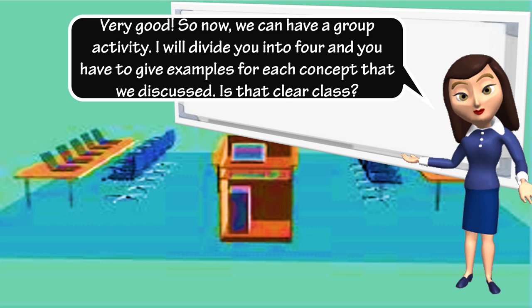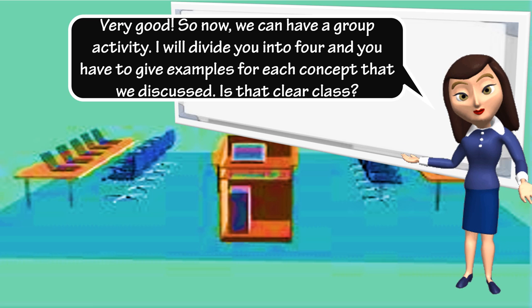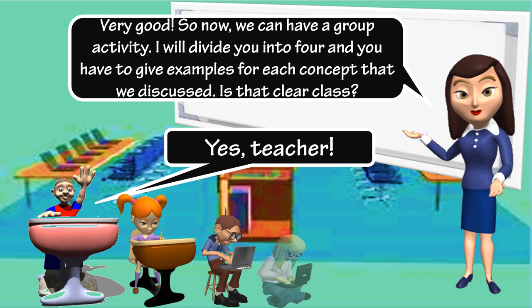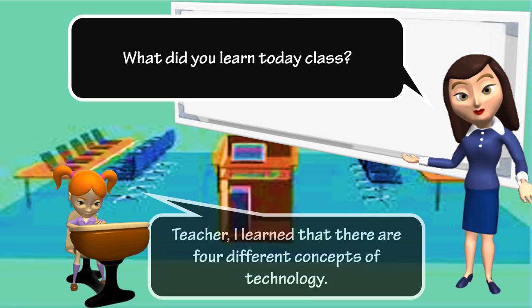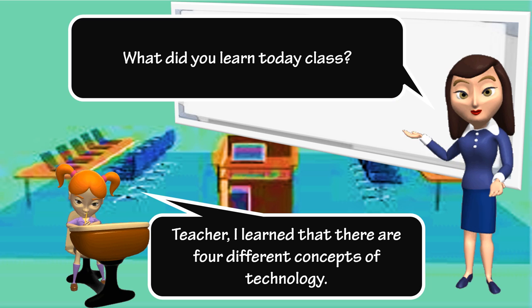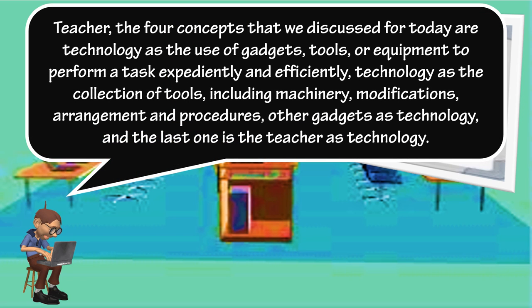So now, we can have a group activity. I will divide you into four and you have to give examples for each concept that we discussed. Is that clear class? Yes, teacher. What did you learn today class? I learned that there are four different concepts of technology. So can you name these concepts? The four concepts that we discussed for today are: technology as the use of gadgets, tools, or equipment to perform a task expediently and efficiently; technology as the collection of tools, including machinery, modifications, arrangement and procedures; other gadgets as technology; and the last one is the teacher as technology.